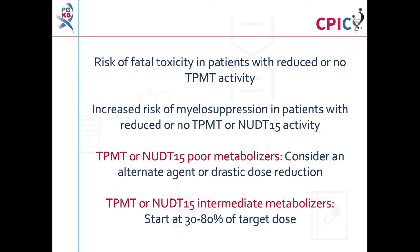Due to the risk of fatal toxicity in TPMT poor metabolizers and the increased risk of myelosuppression in TPMT or NUDT15 poor metabolizers, the guideline recommends the use of alternative therapies or a drastic dose reduction in these patients. A dose reduction is also recommended for TPMT or NUDT15 intermediate metabolizers.